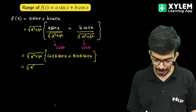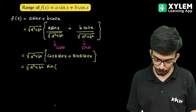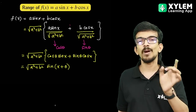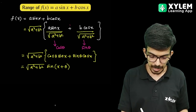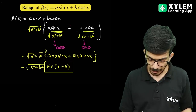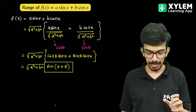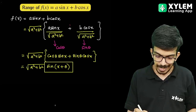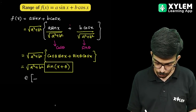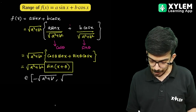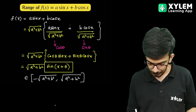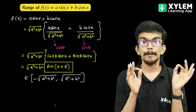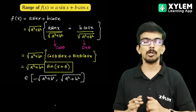This is root over a square plus b square into sin(x plus theta). Now the range of this expression — since sin ranges from minus 1 to plus 1 — gives us: if f equals a sin x plus b cos x, the range is minus root over a square plus b square to plus root over a square plus b square. This is the important result.